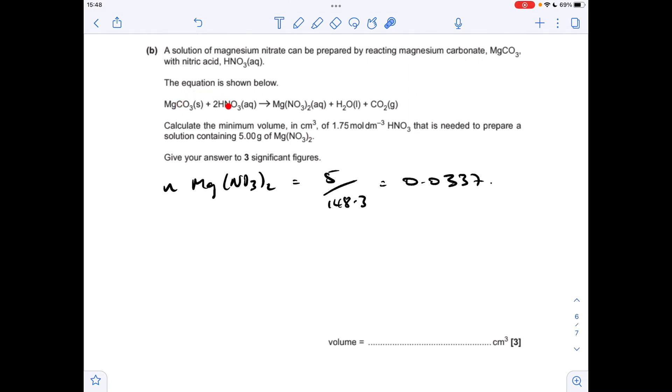Here's the ratio now to work out how many moles of nitric acid we're going to need. It's obviously twice as many. So that's 0.0674 moles of nitric acid.